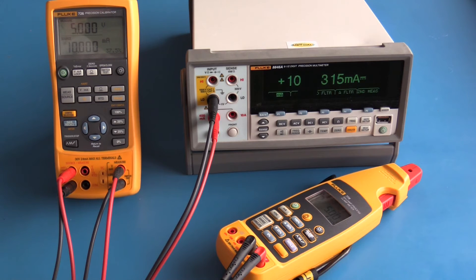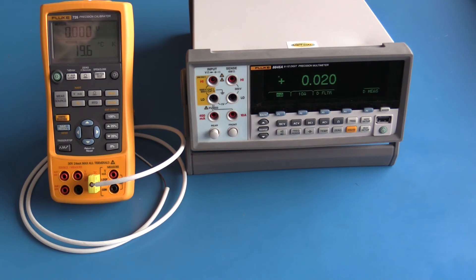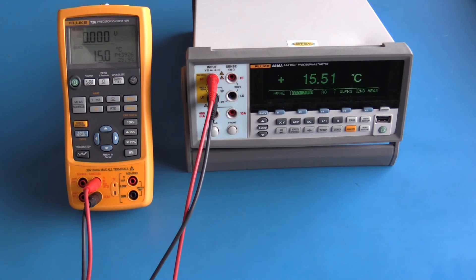The Fluke 726 supports a wide range of thermocouples as well as resistive temperature devices. I currently have a Type K thermocouple connected to the Fluke 726. It's measuring 19.6, 19.7 degrees Celsius. The measured temperature can be displayed in Celsius, Fahrenheit, or Kelvin.